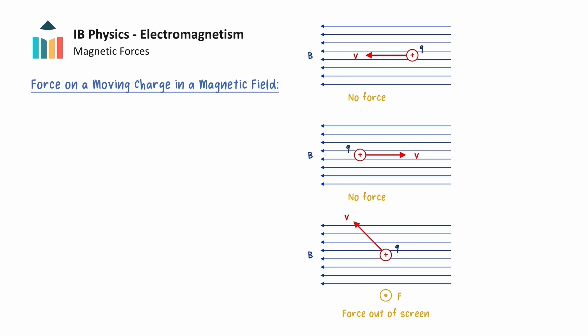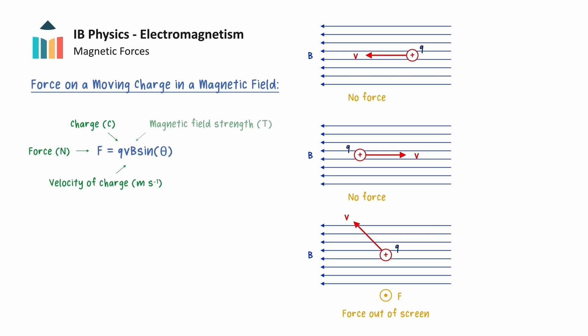In particular, the magnitude of the magnetic force on a moving charge is given by the following expression, where q is the charge of the particle, v is the velocity, and B is the strength of the magnetic field. The angle theta is measured between the direction of the charge's velocity and the direction of the magnetic field, and dictates how strong the magnetic force is on the charged particle.